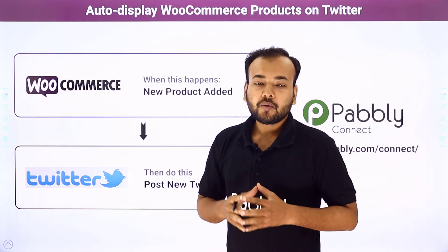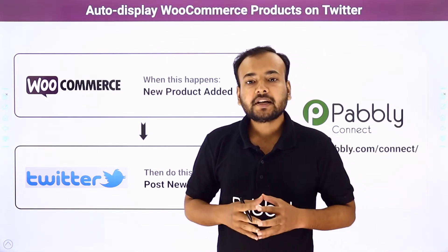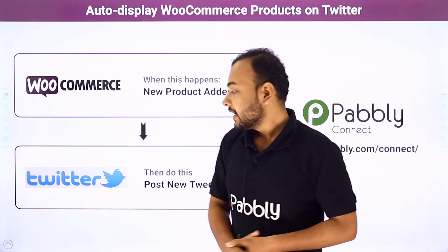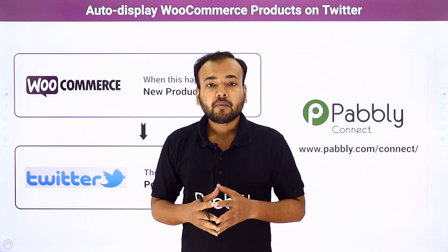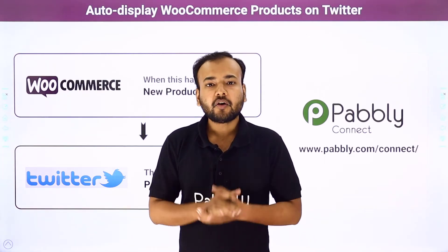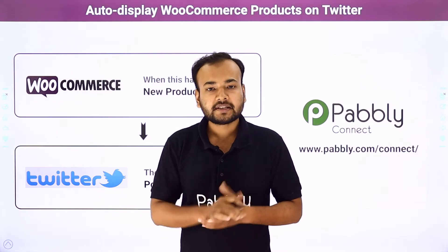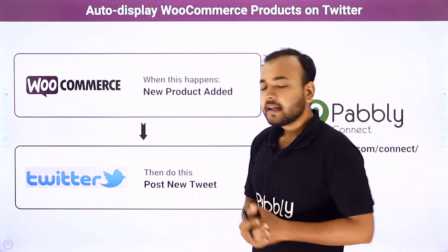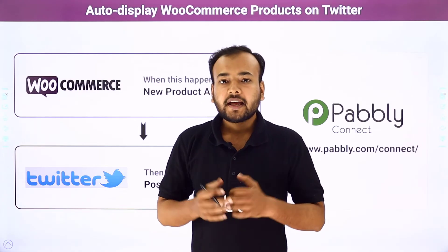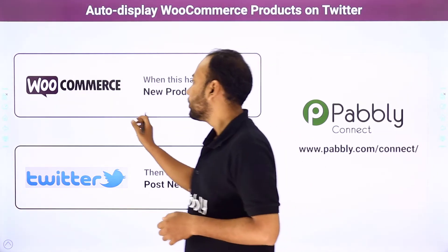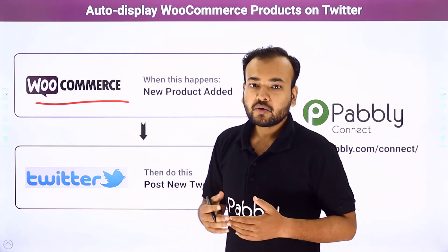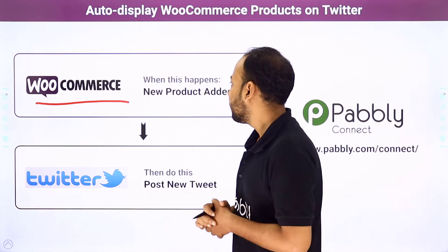WooCommerce is an online e-commerce platform in which you can create your own e-commerce store and sell your products online. And Twitter is a micro-blogging social media application in which you can interact with your audience in the form of short messages known as tweets. Now suppose that you have created an online store here on WooCommerce and you keep updating your store and add new products on a regular basis.